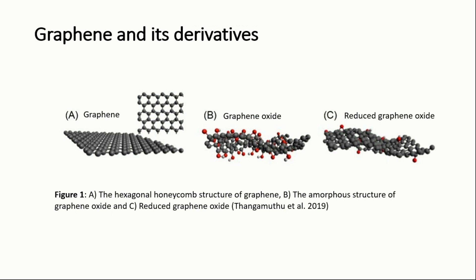Two important derivatives of graphene — graphene oxide and reduced graphene oxide — have abundant functional groups in their structure, which help them interact with other molecules and disperse easily, compared to graphene, which is inert in chemical environments.